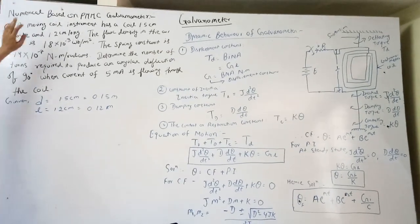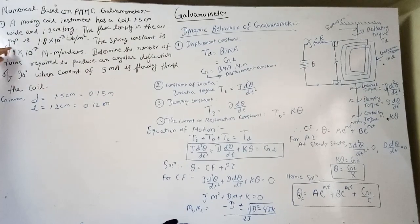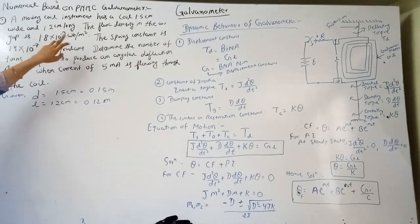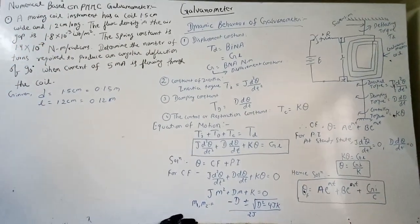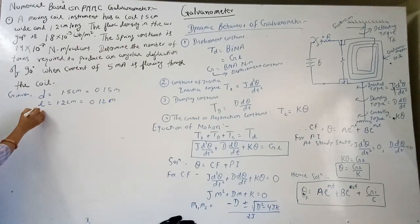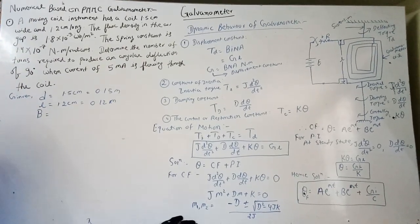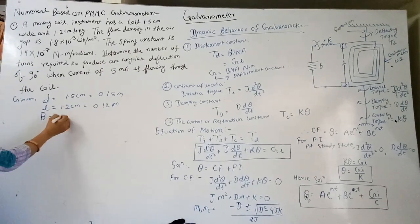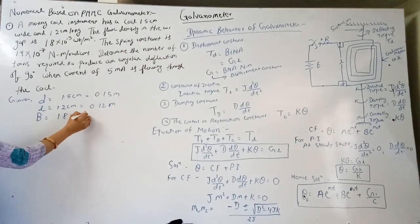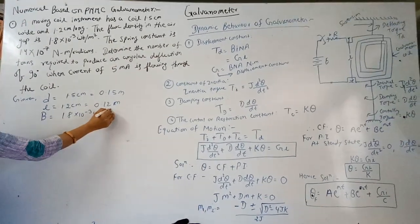Next: the flux density in the air gap is 1.8 × 10⁻³ Weber per meter square. That is, flux density B = 1.8 × 10⁻³ Wb/m².